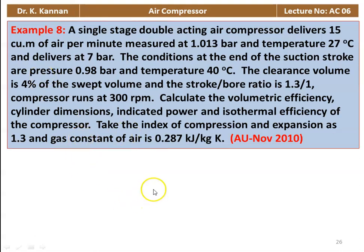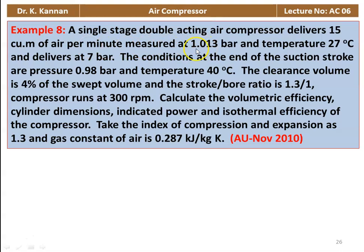Example number 8 from the November 2010 question paper. A single-stage double-acting air compressor delivers 15 cubic meter of air per minute measured at 1.013 bar and temperature of 27 degrees Celsius, and delivers at 7 bar. The conditions at the end of the suction stroke are pressure 0.98 bar and temperature 40 degrees Celsius. The clearance volume is 4% of the stroke volume, the stroke to bore ratio is 1.3, and the compressor runs at 300 rpm.